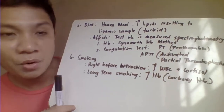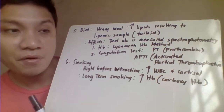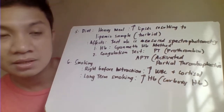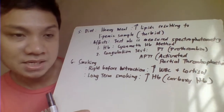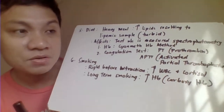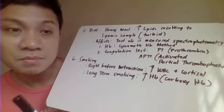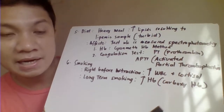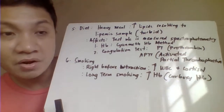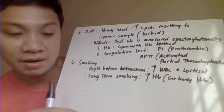Then we have smoking. Smoking right before blood extraction would tend to increase the WBC count and cortisol level of the patient. If the patient is on long-term smoking, the most likely effects are on hemoglobin concentration — specifically the carboxyhemoglobin level.